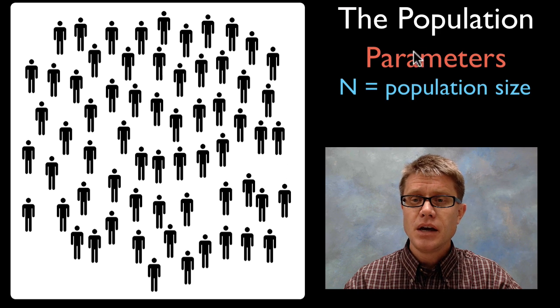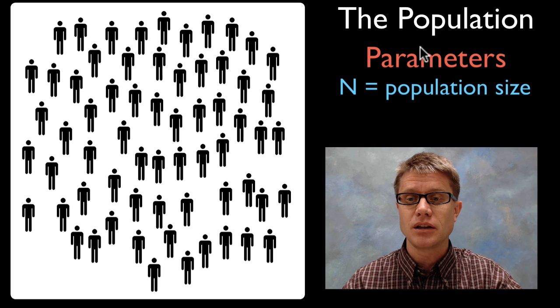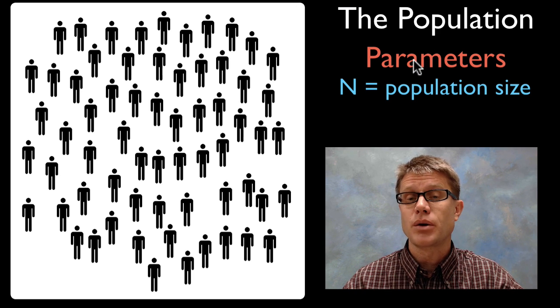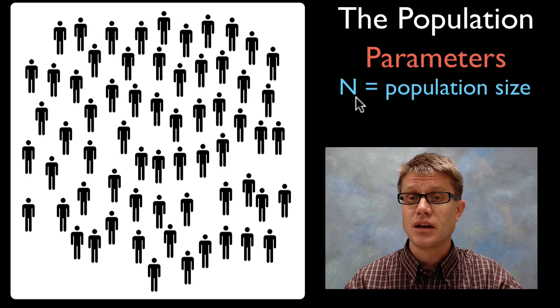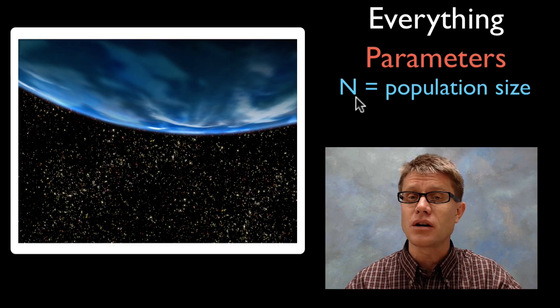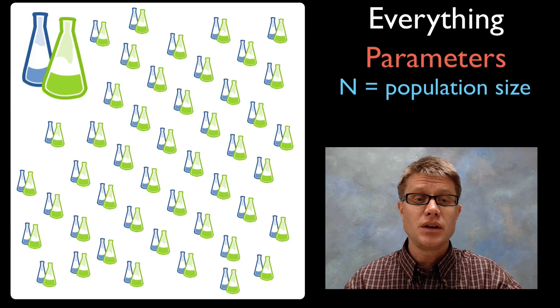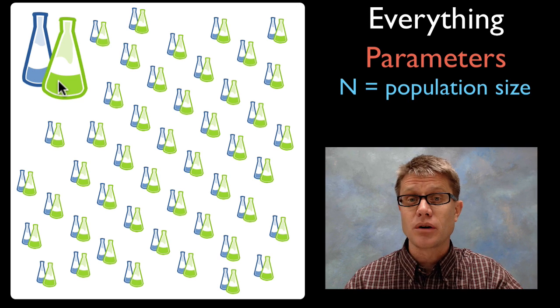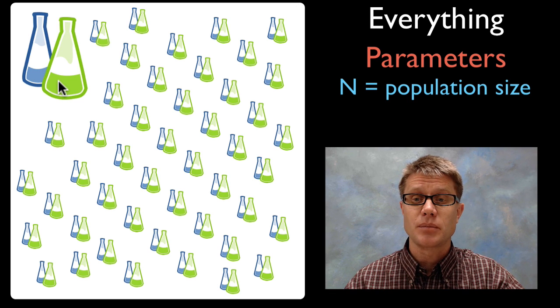When we're studying the population, not to be confused with a population that we study in ecology, all of the characteristics of that are going to be called parameters. An example of one that we'll actually use in science is N, that's the population size. The population is everything. It could be all the stars in the universe or all the planets in the universe, or it could be not only one scientific experiment but an infinite number of scientific experiments that you could do.